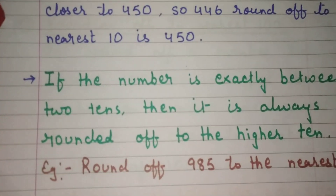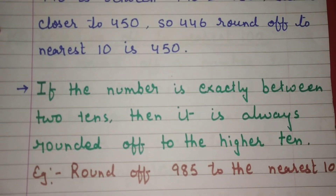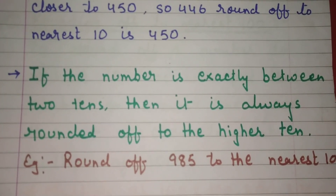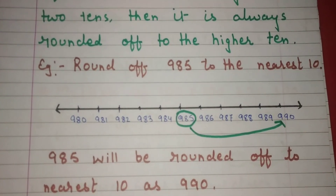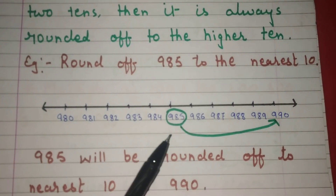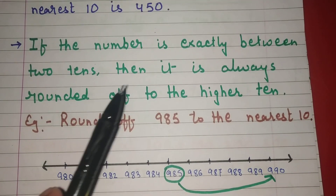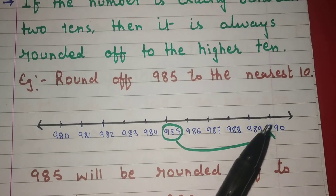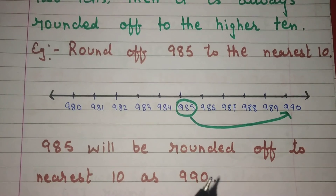Now if a number is exactly between two multiples of 10, then it is always rounded off to the higher 10. For example, round off 985 to the nearest 10. Now 985 is exactly between 980 and 990. Since the number is exactly between two 10s, it is always rounded off to the higher 10, which is 990. So 985 rounded off to nearest 10 is 990.